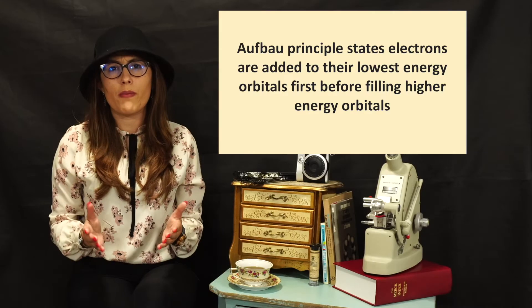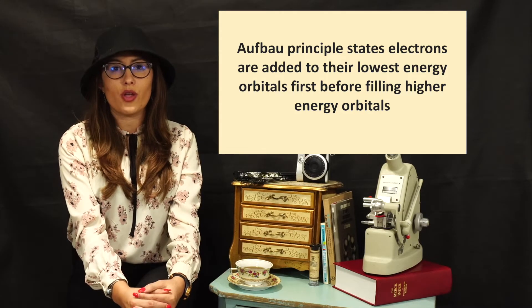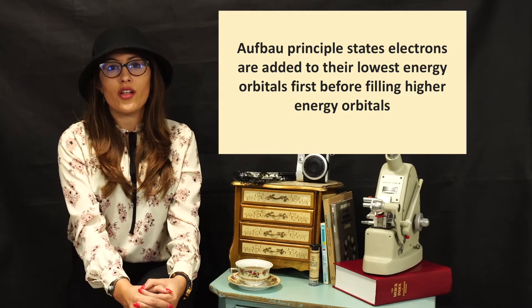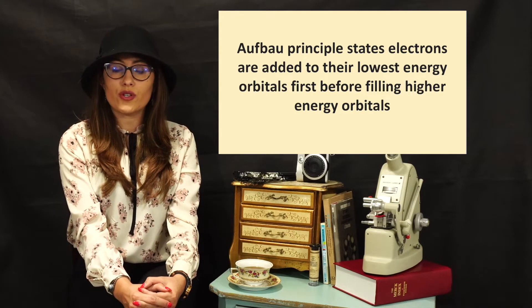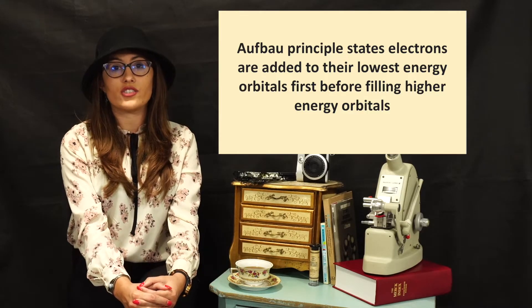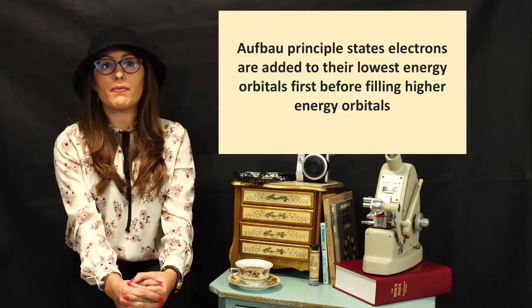If we go back to the Aufbau principle, we learned that electrons are added to the lowest energy orbitals first before filling higher energy orbitals. This is what happens for the d orbitals and for the f orbitals as well. So as you begin to write out electron configurations, it is going to become seemingly harder to determine which energy level is the lowest.